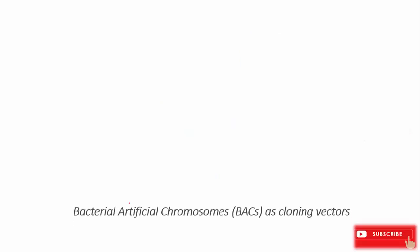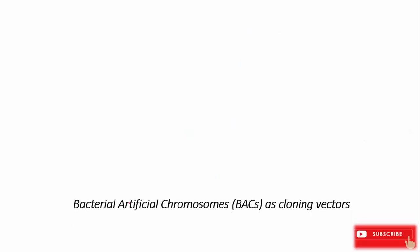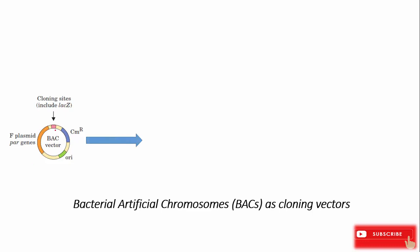Now let's see how we can use a bacterial artificial chromosome as a cloning vector. First, we cut our BAC vector at the cloning site by the help of a restriction endonuclease enzyme, which cuts and produces sticky ends.